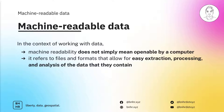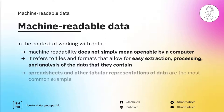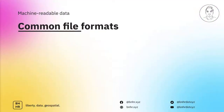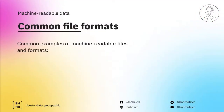For example, if I have a file that has a table of values, there should be an easy and straightforward way for me to get the sum or the average of the values, filter rows based on the values, or sort the table based on column values. Spreadsheets and other tabular representations of data are the most common example of machine readable data. Other structured data formats are also considered machine readable.